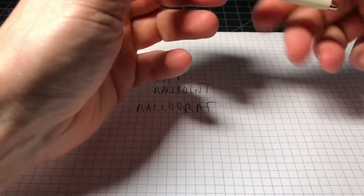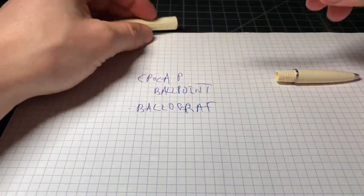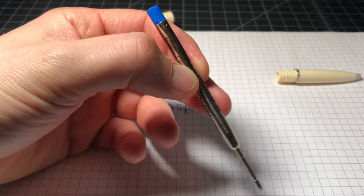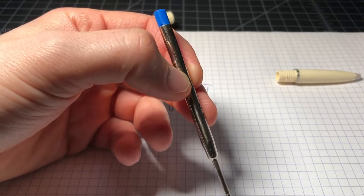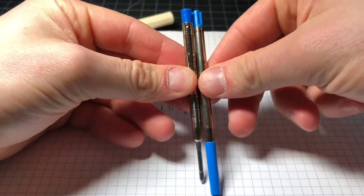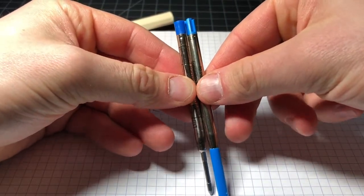The problem with the Bolograph is that it might look like a Parker-style refill, but it's not a true Parker-style refill. And I happen to have one of those for reference right here. We can see they vary slightly from one another.